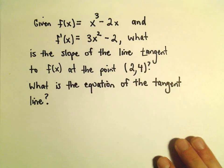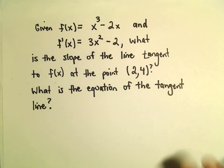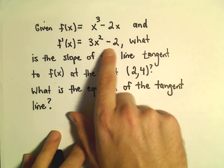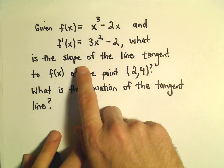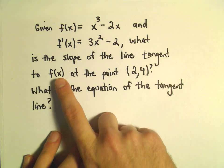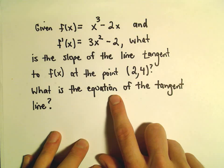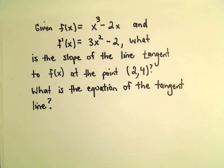We're given the function f of x equals x cubed minus 2x, and already given that the derivative is 3x squared minus 2. We want to answer a couple questions: What's the slope of the tangent line at the point (2, 4)? And also, what would actually be the equation of that tangent line?